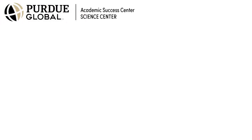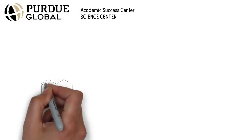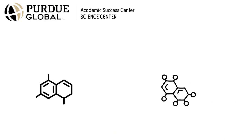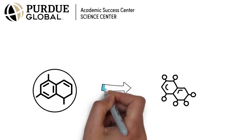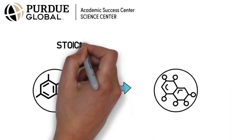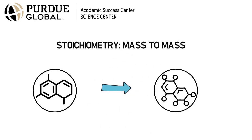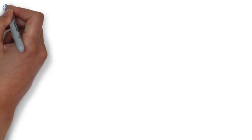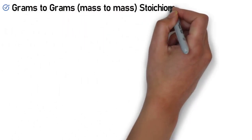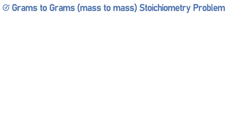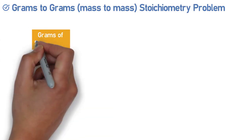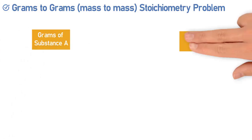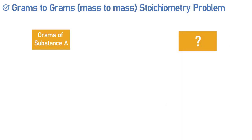Hello, in this video we will guide you through the stoichiometric problems of going from mass of one compound to get the mass of another compound, also known as mass-to-mass stoichiometry. Let's begin by looking at the general formula for doing a grams-to-grams or mass-to-mass stoichiometry problem. You will generally be given grams of a substance and asked to find the grams of another substance.